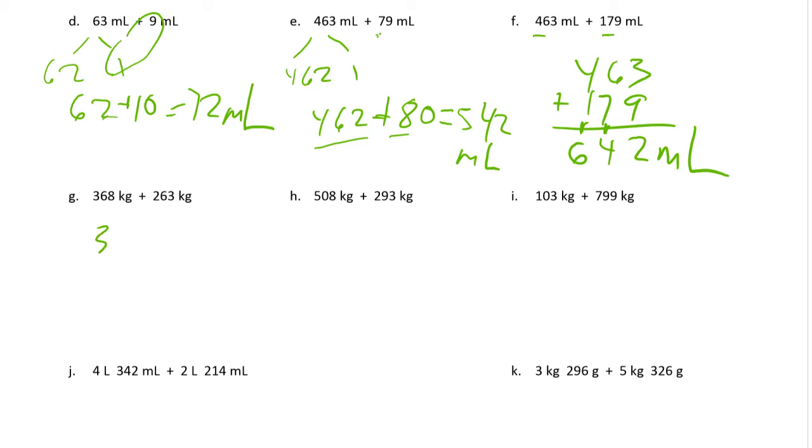And you have 368 and 263. Let me erase that because I want to give myself a little more room to work with. 368 and 263. We're adding these. That's 11. Let me add our 10s together. That's 13 tens. And then that's 600s. And these are kilograms.